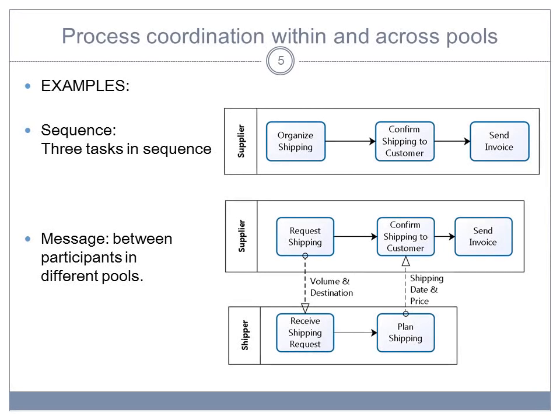This means that the global coordination across participants and within participants is a combination of sequences and messages. So sequences are used to coordinate tasks within a single participant. So here you see the example at the top, you have the supplier, and then you have organized shipping, followed by confirmed shipping to customer, followed by send invoice. So sequences are used to coordinate within the supplier participant.